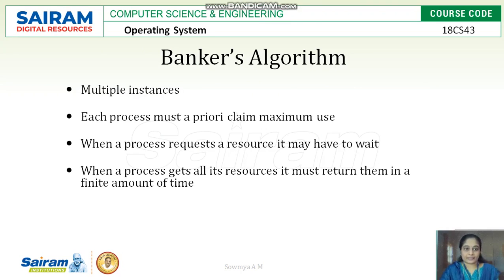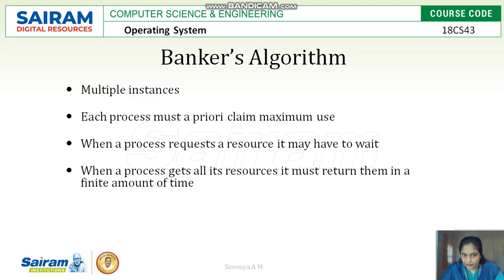For multiple instances, as mentioned, we use Banker's Algorithm. If the resource has multiple instances, the process must declare prior claims for maximum utilization. If resource Rj has j instances, the process must pre-declare the maximum use of those instances. When the process requests a resource it may have to wait until it is served, and after receiving all requested resources, it must return all resources in a finite amount of time.